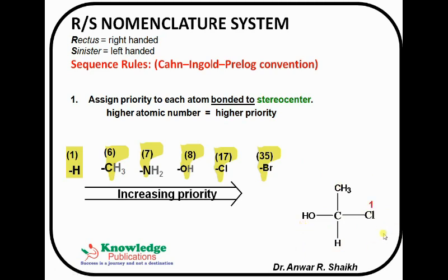Here, chlorine will be given the first priority with atomic number 17. Then oxygen (hydroxyl group) with atomic number 8. Then carbon (methyl group) with atomic number 6. The last one is hydrogen with atomic number 1. Therefore, the priority order 1, 2, 3, 4 is given.